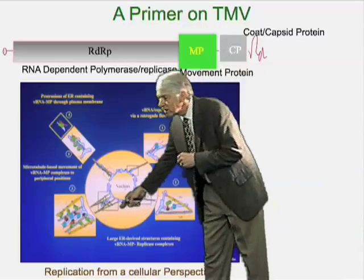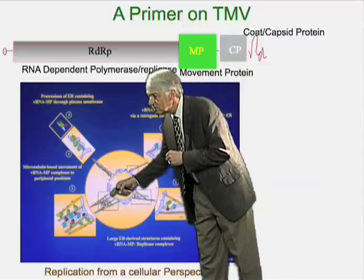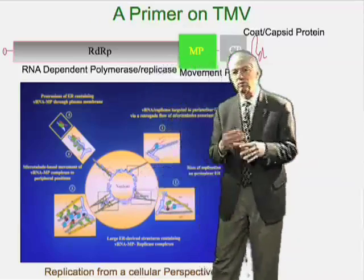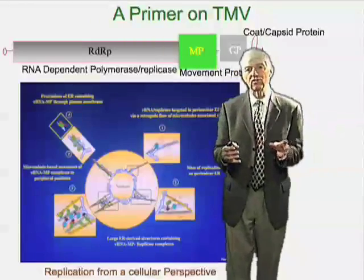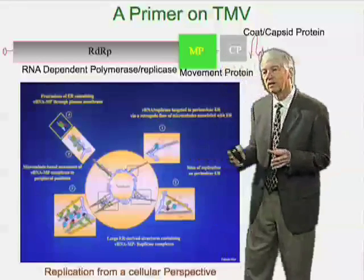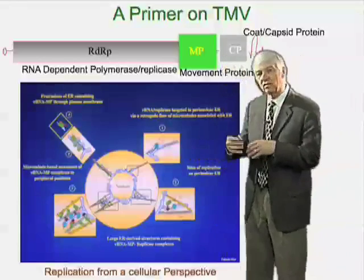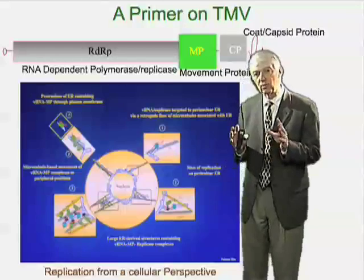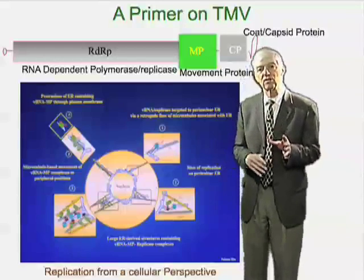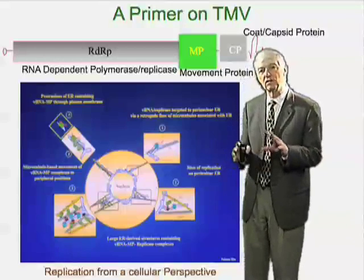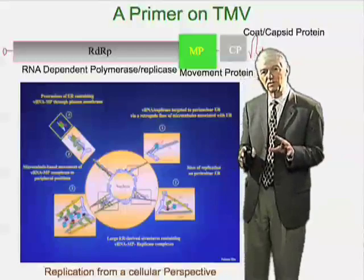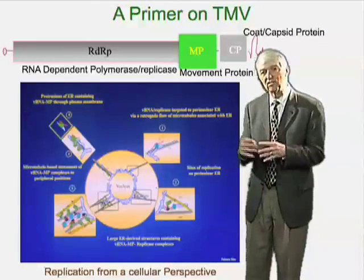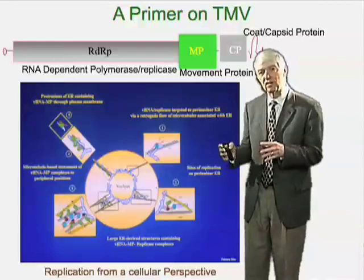The virus continues to build factories until it makes very large bodies. Those bodies reproduce themselves, move around the cells, and eventually move from cell to cell. The real challenge is for the virus to use the cellular machinery to do all of these processes and to move from cell to cell.